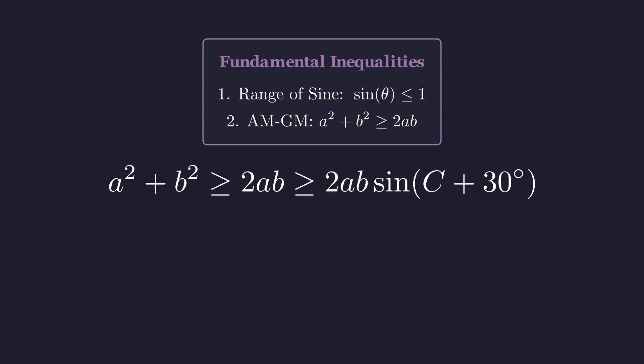This creates an unbreakable logical chain. A squared plus B squared is at least 2AB, and since sine of C plus 30 degrees cannot exceed one, 2AB is at least 2AB times that sine value. The chain holds, and our inequality is proven.